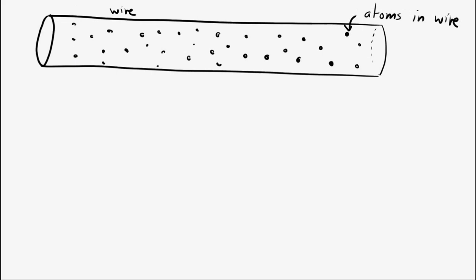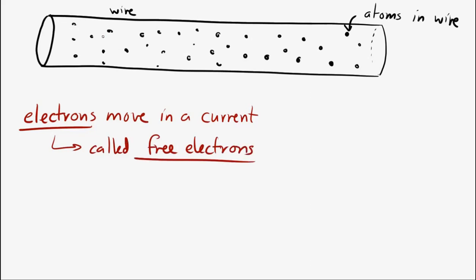The things that are physically moving are electrons. These are called free electrons, these ones that are moving. Free electrons, or sometimes they're called conduction electrons, or they're also called charge carriers. But these are the things, these are the charges, which are physically moving in the wire, which cause a current to be present.